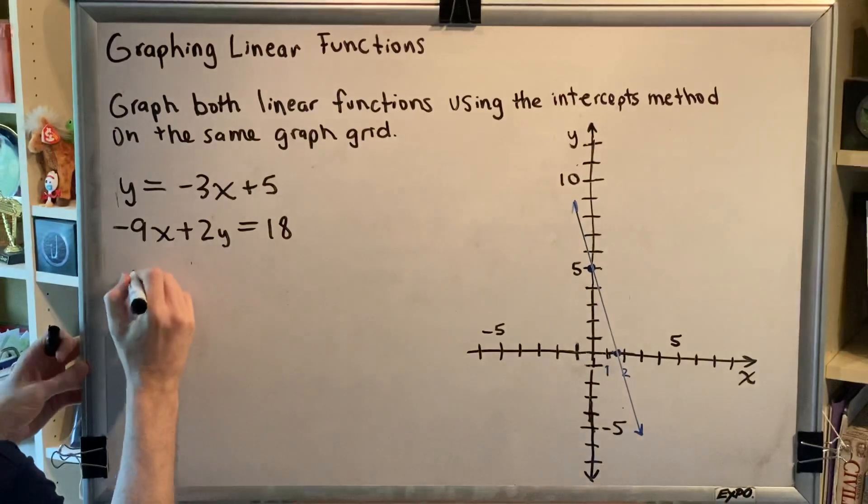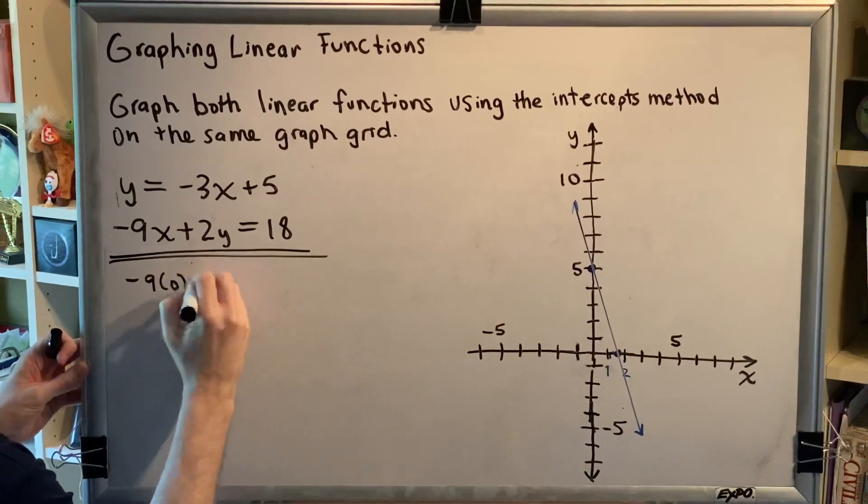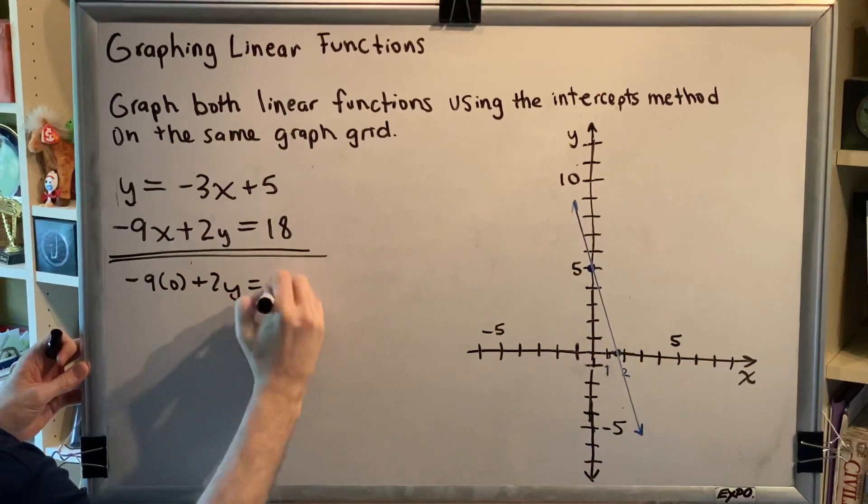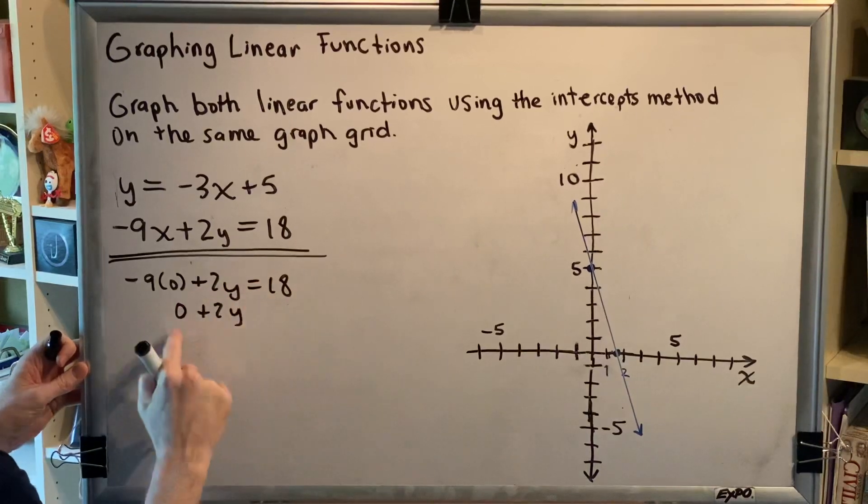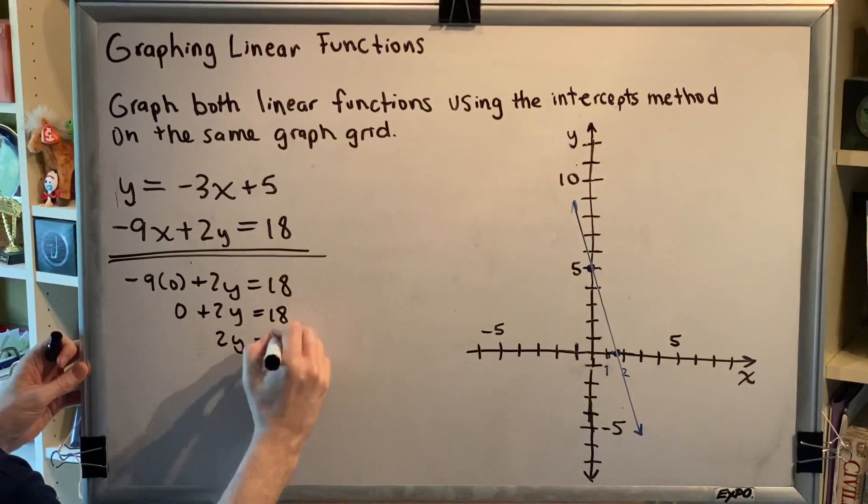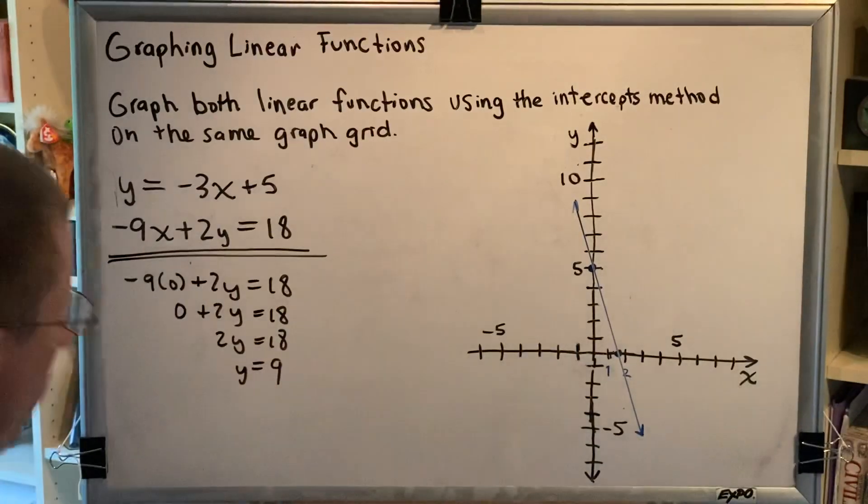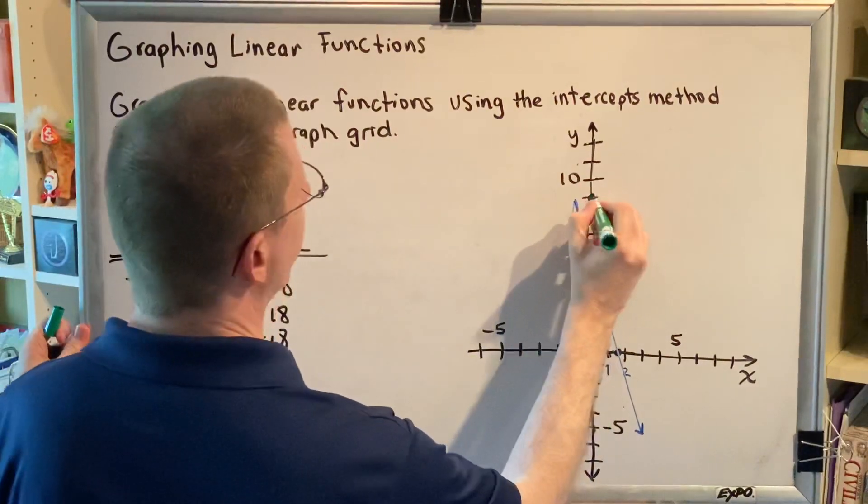So first we'll replace x with zero. We have negative nine times zero plus two y equals 18. Negative nine times zero is zero. Zero plus two y is two y. Divide by two on both sides. Y equals nine. So I'll put y equals nine on our graph grid.